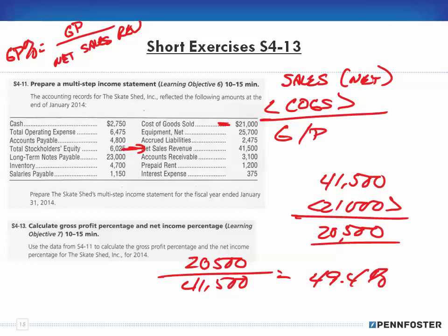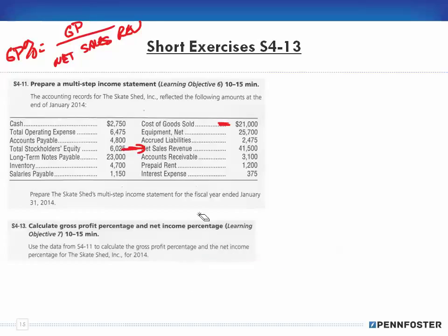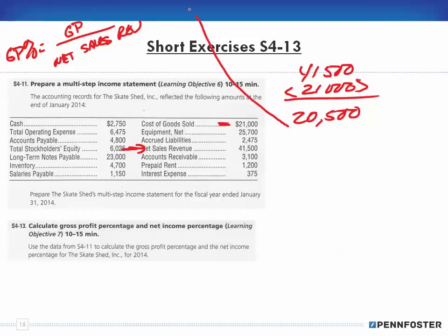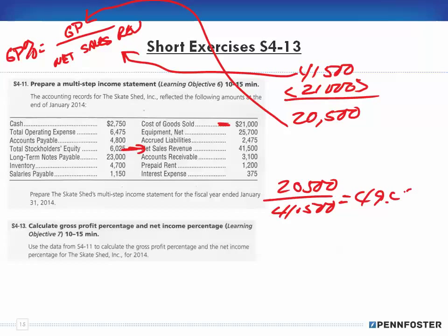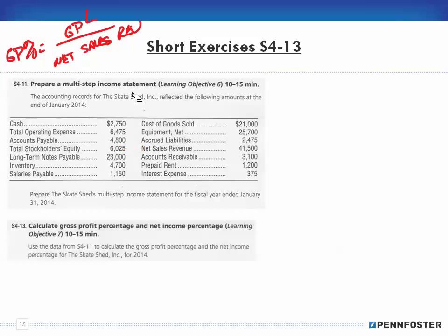To work it out quickly: gross profit is $41,500 less $21,000, which equals $20,500. That is our gross profit. Our net sales revenue is $41,500. Dividing $20,500 by $41,500 gives us 49.4%. That is the gross profit percentage.